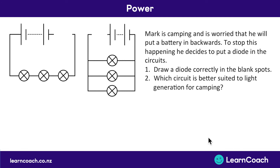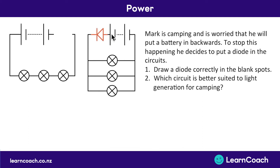Let's look at a question. Mark is camping and he's worried about putting a battery in backwards. To stop this, he decides to put a diode in both circuits. We need to do two things: draw a diode correctly in the two blank spots, and discuss which circuit is better suited for light generation when camping. With a battery, the long side is positive and the short side is negative, and current always goes from positive around to negative. Therefore, we put the diode in the same direction so the current flows out of positive, through the diode in the correct direction, and back around into the negative terminal.